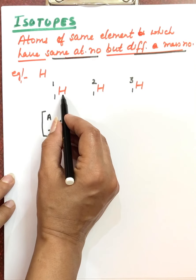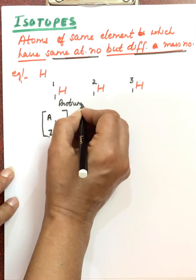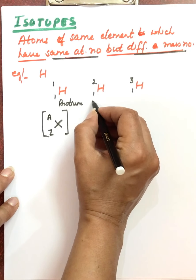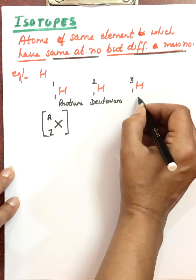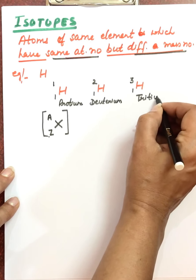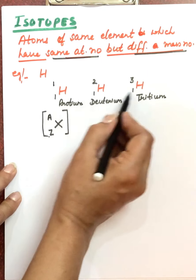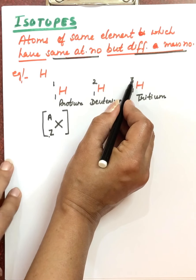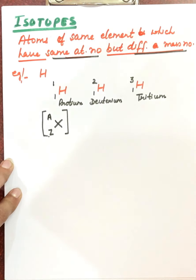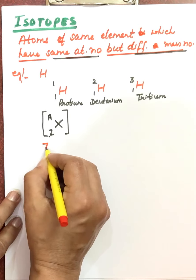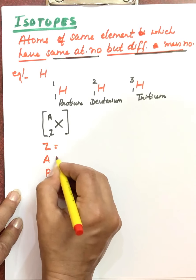The first isotope of hydrogen is called protium, the second is known as deuterium, and the third is tritium. From these symbols we can find the atomic number, mass number, and also the number of electrons, protons, and neutrons in these atoms.